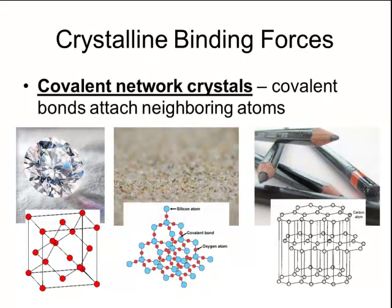A second type of crystalline solid is a covalent network crystal, and this occurs when there are covalent bonds that attach neighboring atoms together. Some examples include diamonds — the carbon atoms are all connected together with covalent bonds and arranged in a tetrahedral pattern that gives diamonds their incredible hardness. Sand is also an example of a covalent network crystal, where the covalent bonds occur between silicon atoms and oxygen atoms. And the graphite used in pencils is also a network crystal of carbon atoms, but unlike diamond, the carbon atoms are arranged in sheets that can easily slide past each other, which makes graphite ideal for writing.